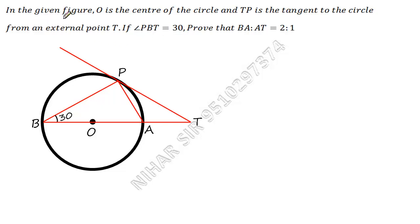Let us solve this question in the figure given below. O is the center of the circle and TP is the tangent. So this is TP, the tangent to the circle from an exterior point T. Angle PBT is equal to 30. Prove that BA to AT is 2 to 1.